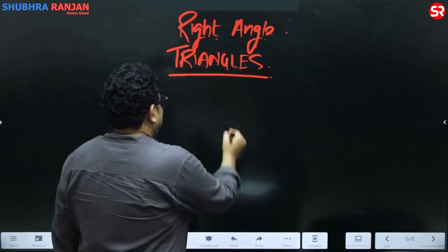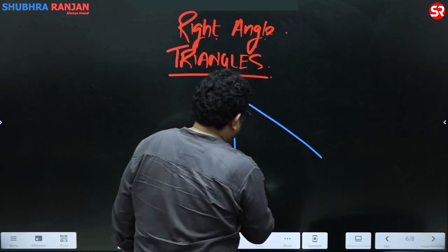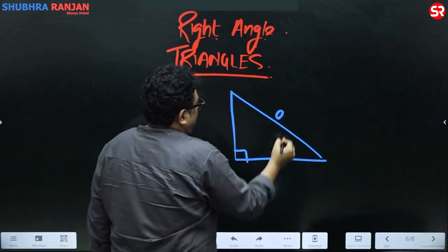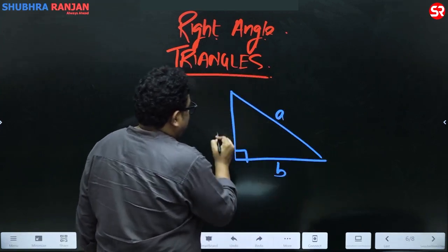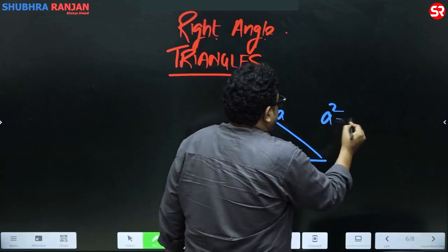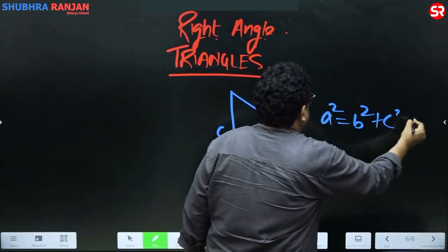What is the right angle triangle? This is a right angle triangle. If this is a, this is b, and this is c, Pythagoras said a square is equal to b square plus c square.